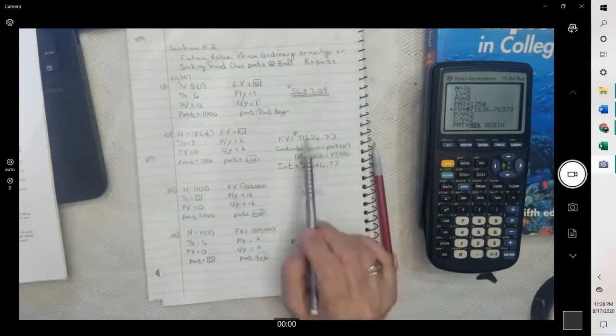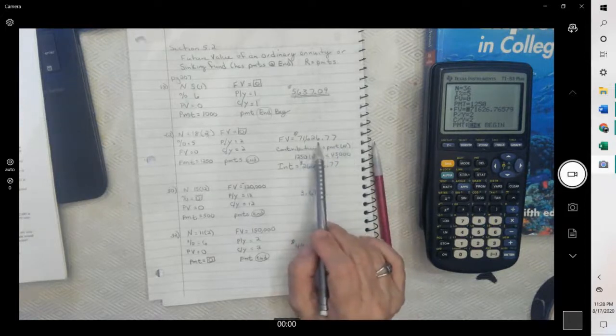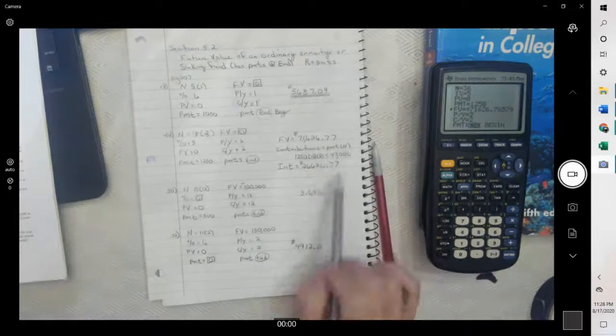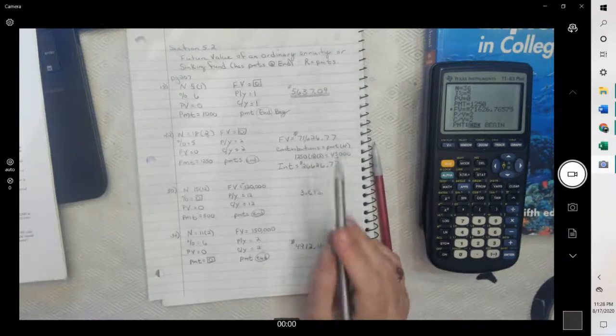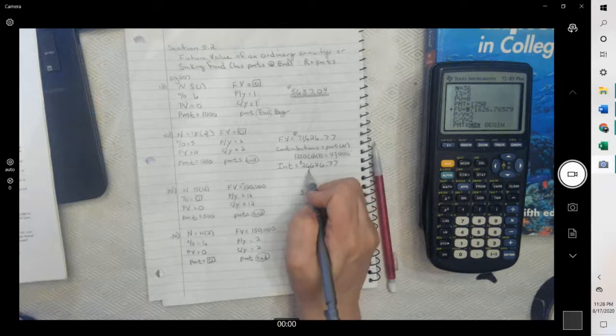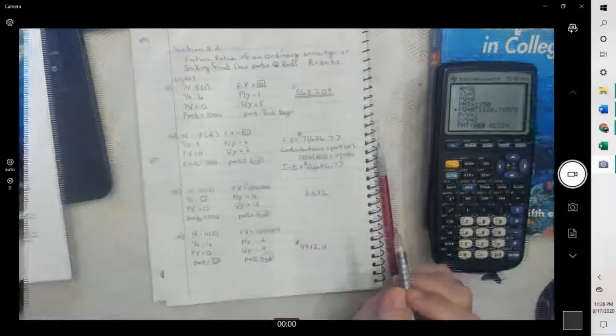To find the interest then, you just subtract these two. So you take the 71,626 and subtract the 45,000, which is the money you put in, and you made $26,626.77 in interest.